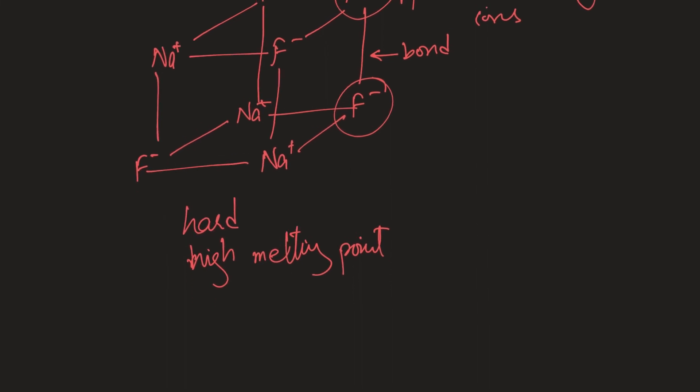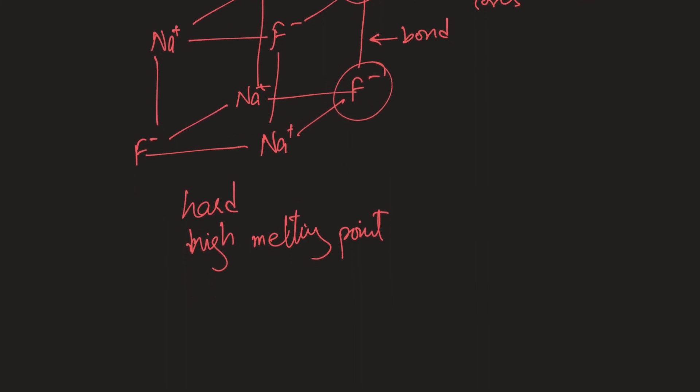And thirdly, because ions are not free, they cannot conduct. So they're bad conductors. But if I were to break the lattice, these ions will then be free. And because they're ions, they have charges on them—they can carry energy and flow, which is why they make good electrolytes. They're good conductors when you melt them or make a solution from them.